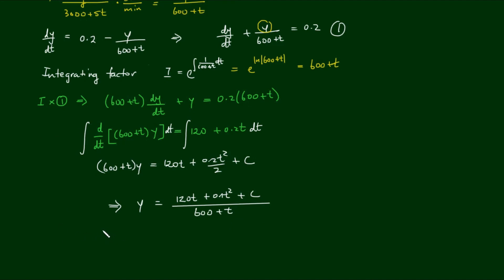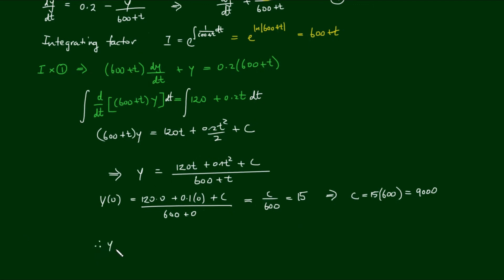And now finally, all we have to do is apply the initial condition, y of 0 equals 120 by 0 plus 0.1 by 0 plus c over 600 plus 0, which gives us c over 600 equals the initial 15 kilos of salt that we have in the tank. So this means then that c, the integration constant, is equal to 15 by 600, which equals 9,000. So for this mixing problem, the amount of salt as a function of time until the tank fills up is equal to 120t plus 0.1t squared plus 9,000 all over 600 plus t.